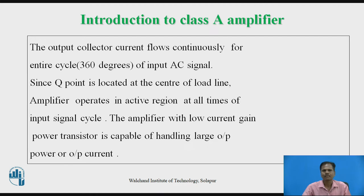The power transistor, the amplifying device used in power amplifiers, is biased in such a way that its output collector current flows continuously for the entire cycle of input AC signal waveform, for 360 degrees. Since its DC operating point or Q is located at the center of the load line and in the active region, the amplifier operates in the active region at all times of the input signal cycle.